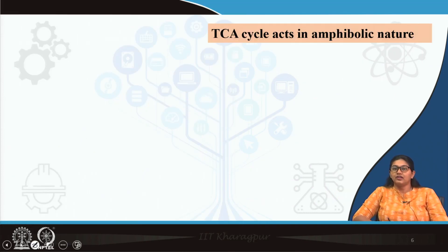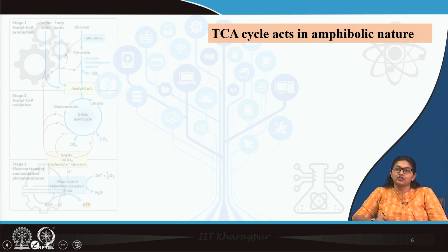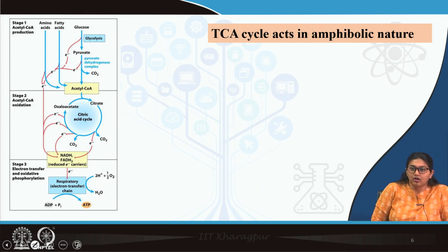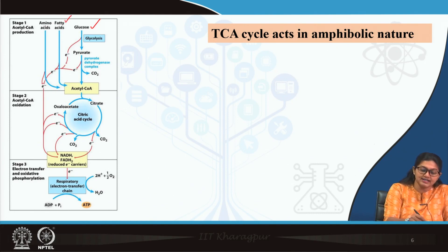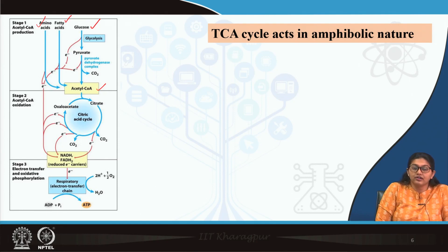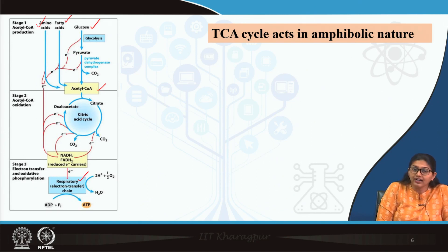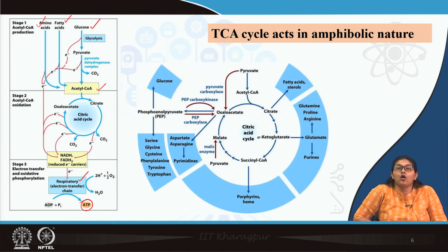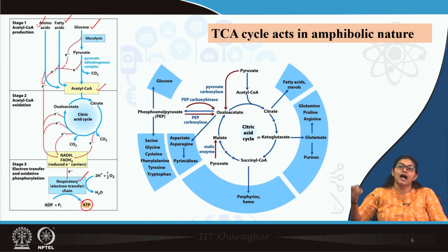TCA cycle acts as an amphibolic pathway because it acts as both anabolic and catabolic pathway. In catabolism, all metabolites — glucose, fatty acids, amino acids — enter as acetyl coenzyme A into the TCA cycle. Inside the TCA cycle, NADH and FADH2 are formed; these reducing equivalents enter the electron transport chain and form ATP. TCA cycle also acts as an anabolic pathway, forming different precursor molecules important for other biosynthetic pathways.